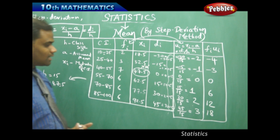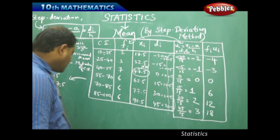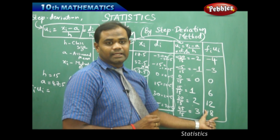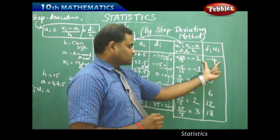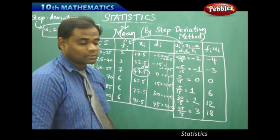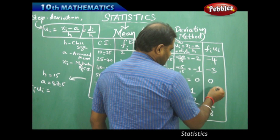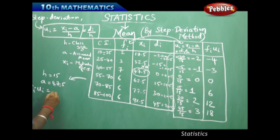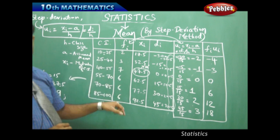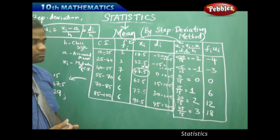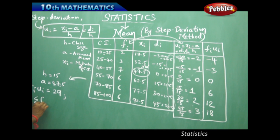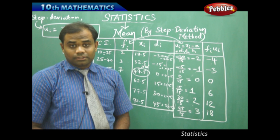Now I calculate the sum sigma fi × ui by adding each value: minus 4, minus 3 gives minus 7; plus 0 remains minus 7; plus 6 gives minus 1; plus 12 gives 11; plus 18 gives 29. So sigma fi × ui is 29. My sigma fi is already calculated to be 30, since the same problem is used across all methods.